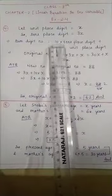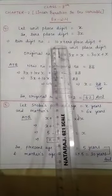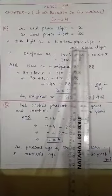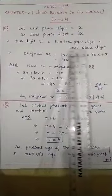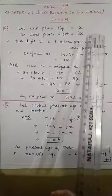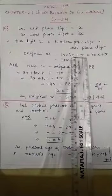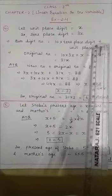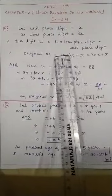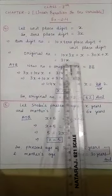Now how do you form the two digit number? As done in the previous question: 10 multiplied by tens place digit plus unit place digit. So the original number is 10 × 3x + x, which becomes 30x + x, which means 31x.